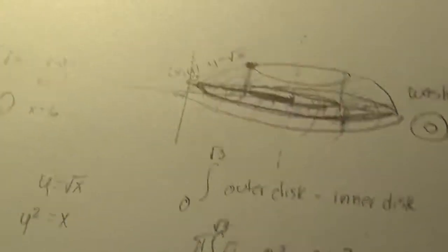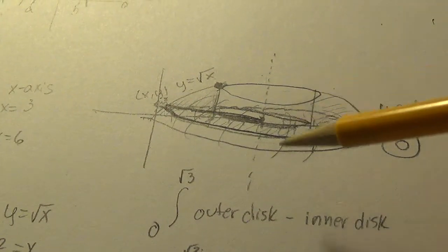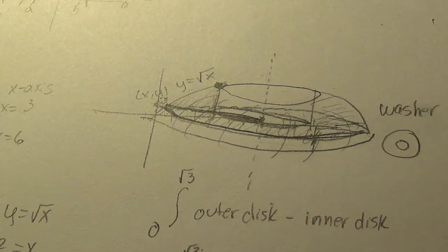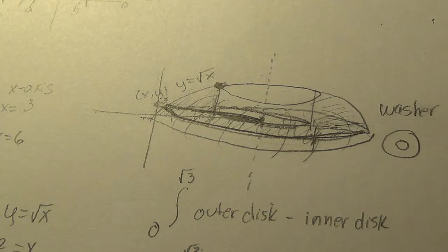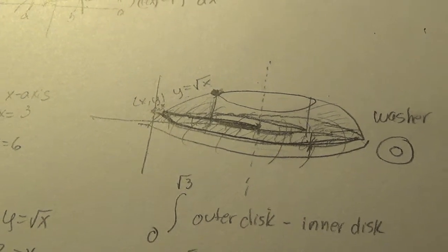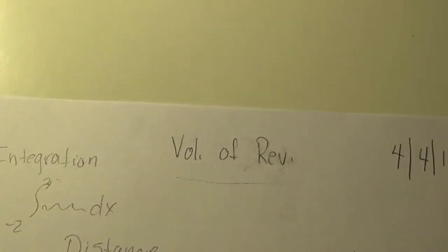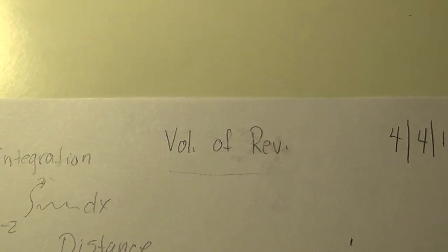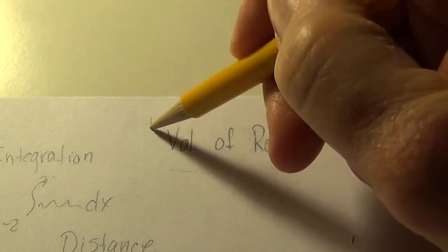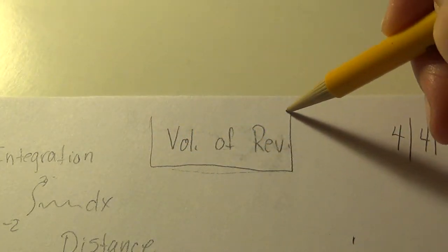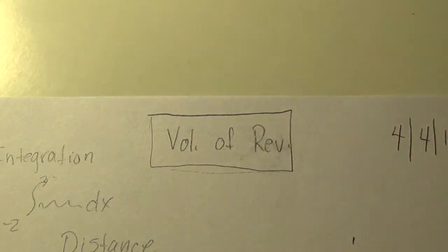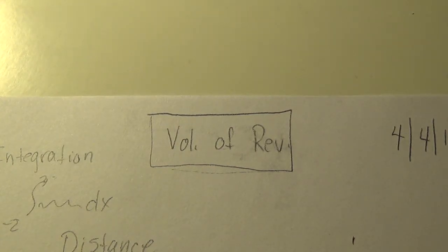So just some theory there, outer disc minus the inner disc. We're going to go ahead then and call it a night. So hopefully, when you actually do these, this will all make a lot more sense. Volumes of solids of revolution. Till we meet again, carry on.